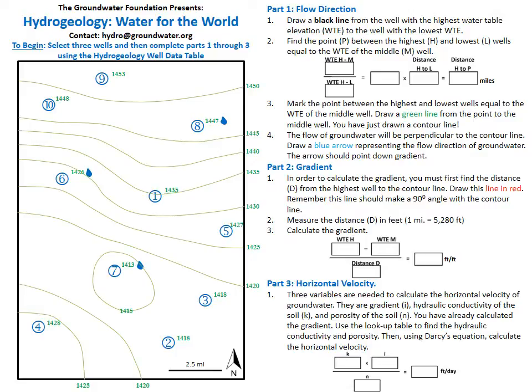Once again, draw in your water table elevation contour lines every 5 feet. This time, you should have contour lines from 1,415 feet all the way to 1,450 feet. Now that three wells are pumping water, the general direction of groundwater flow has been altered. In the northern part of our scenario we still have groundwater flowing from the north, but in the southern portion the groundwater is now flowing toward the northeast. Once again, we will calculate the groundwater flow using wells 1, 5, and 7, marked in red, to determine how human impact affects groundwater flow.